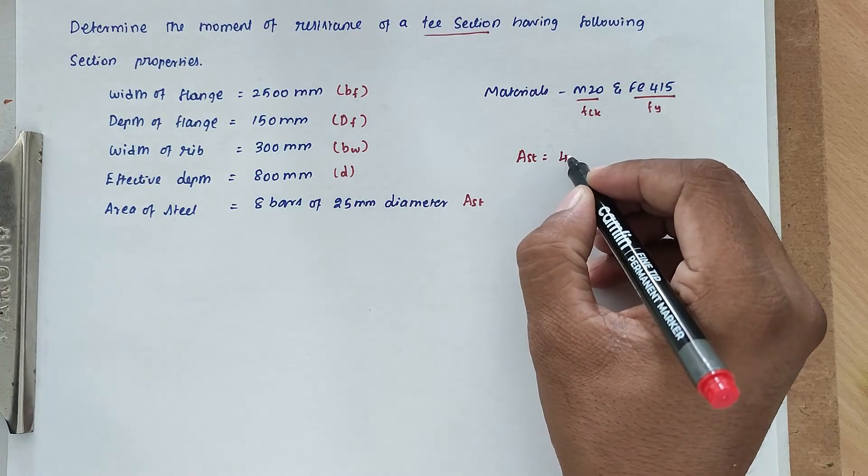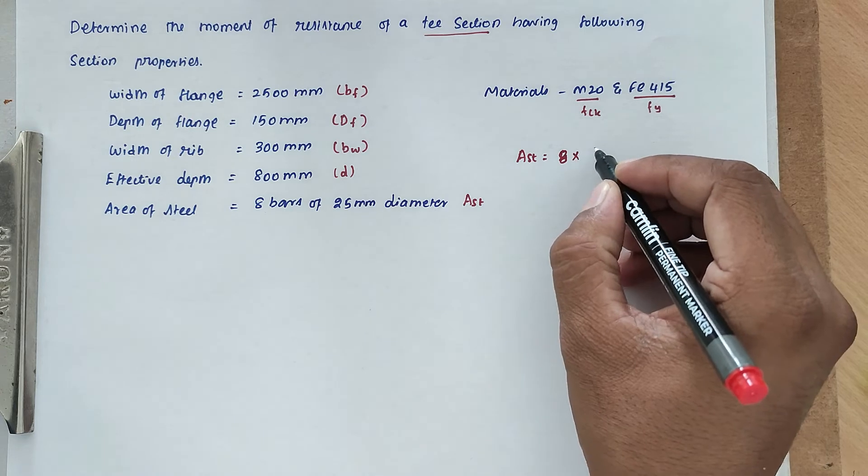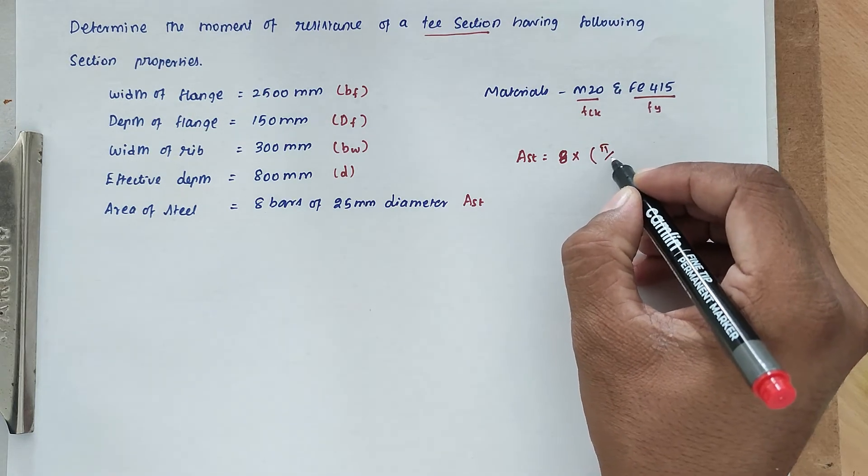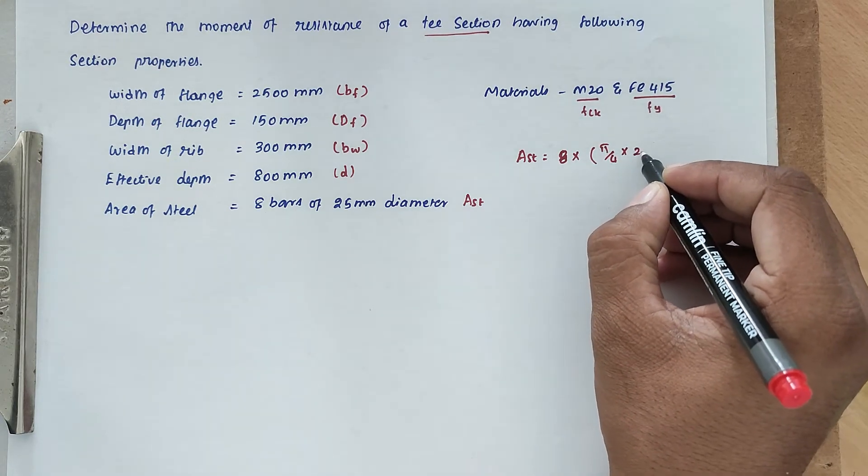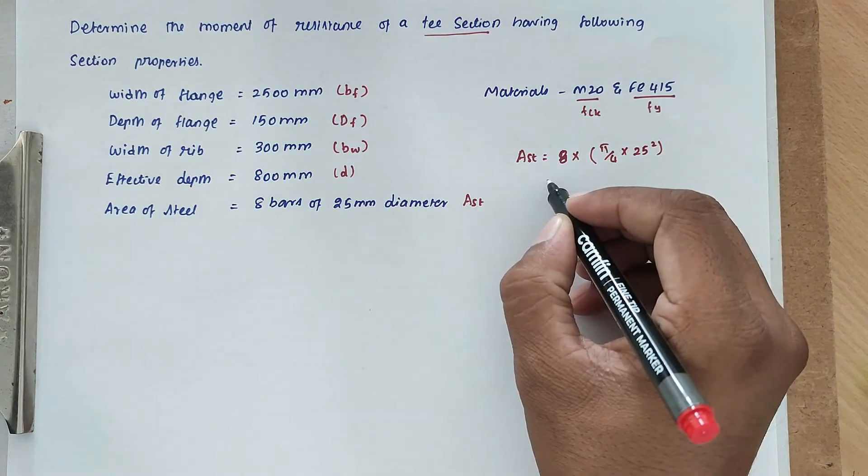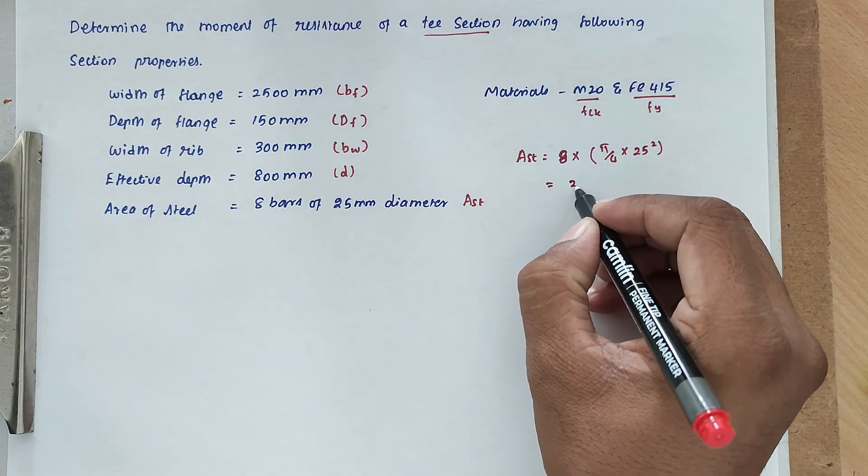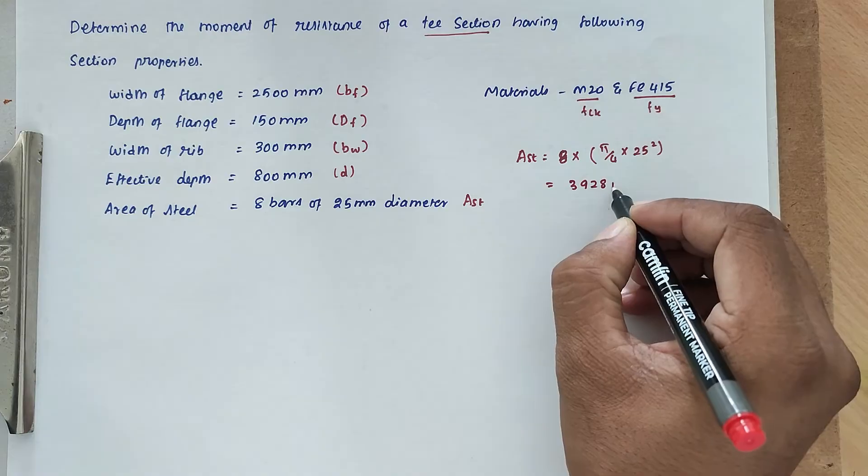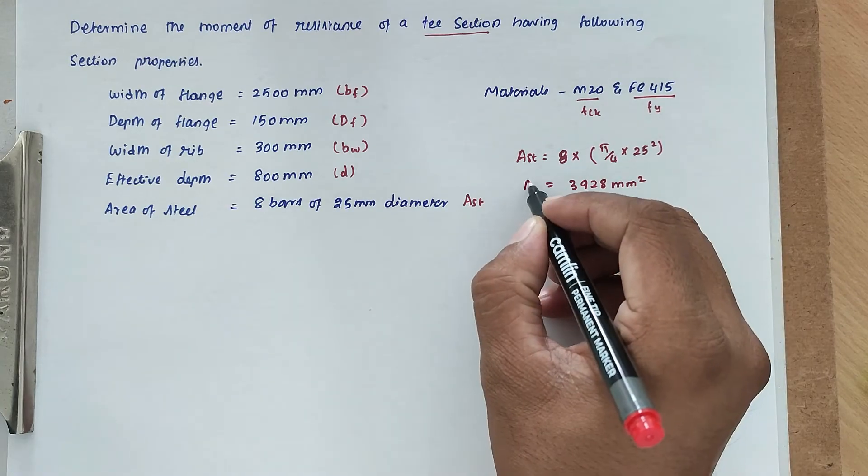AST equal to 8 numbers of 25 mm diameter, so π/4 into D square, that is 25 squared. We got the value of 3928 mm squared. That is AST.